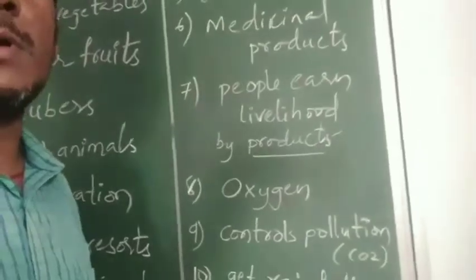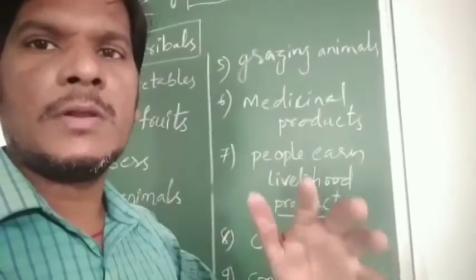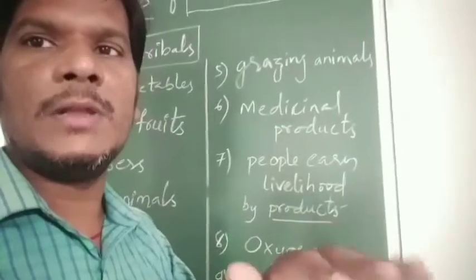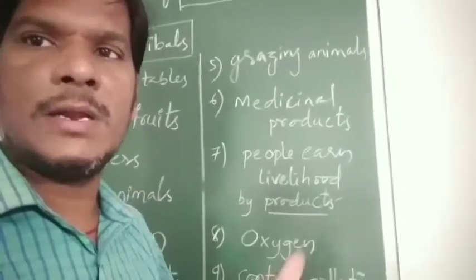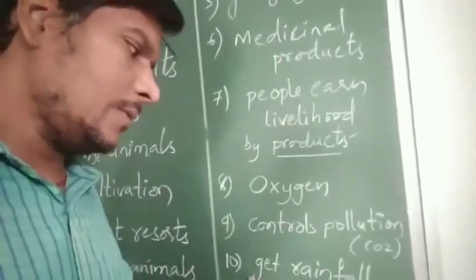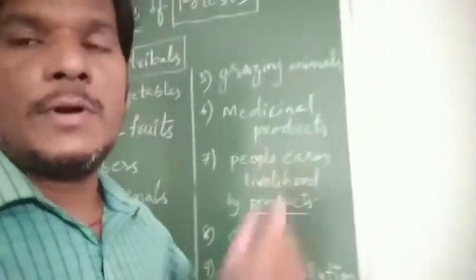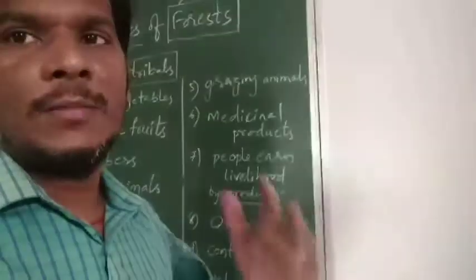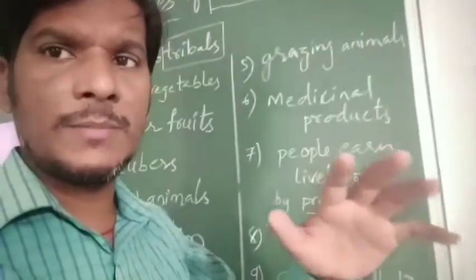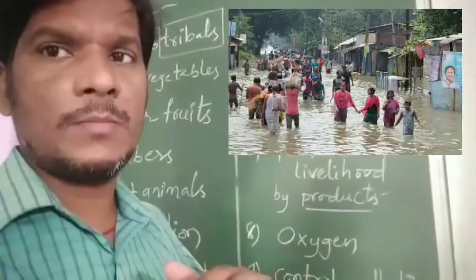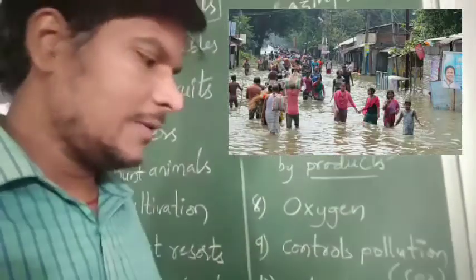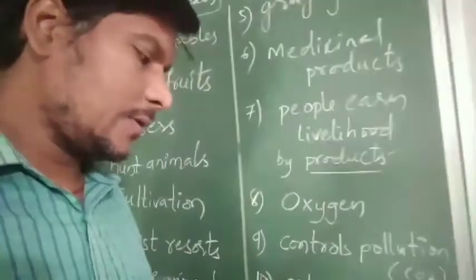We also get rainfall from forests. Forest areas regularly get more rainfall, and where there are fewer forests, there is less rainfall. So forests are useful in getting rainfall. When floods happen, trees stop and slow down the flow of water. Forests control flooding by trees surrounding river areas.